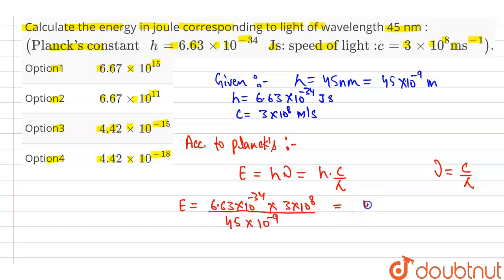With solving, we get 4.42 × 10^-18. So our correct option is option number 4, 4.42 × 10^-18. Thank you.